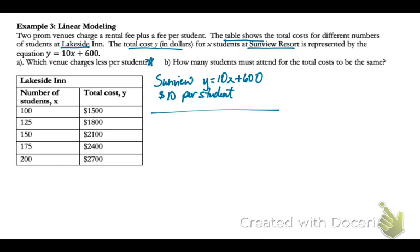Lakeside Inn, however, we just have tables of values. We don't know that, but we can easily figure it. You may even be figuring it in your mind right now, but I'm going to use the formula. So I'm going to take the first two situations as my points and subtract, find my difference in y's divided by my difference in x's. So that shows that Lakeside Inn would charge about $12 per student. So Sunview charges less per student.